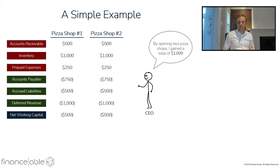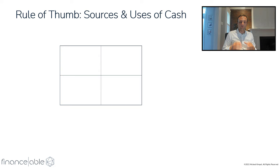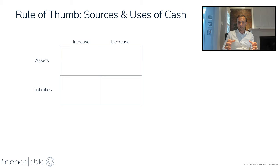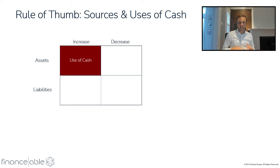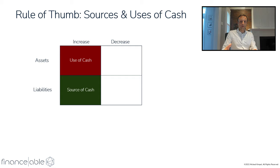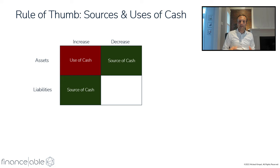The punchline here is that for negative working capital businesses, they actually generate extra cash as the business grows. Now, as we'll see shortly, this is actually a double-edged sword. Before we jump to our next example, I want to quickly recap the framework around sources and uses of cash. An increasing asset is a use of cash — we're putting money into the system. An increasing liability is a source of cash because we're being lent money. And the opposite is true: a decreasing asset is a source of cash, and a decreasing liability is a use of cash. We're going to use this in the next example.